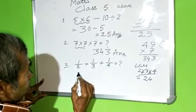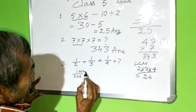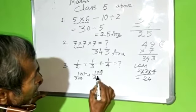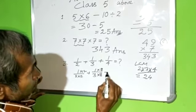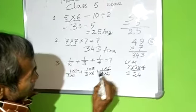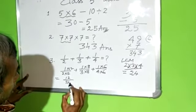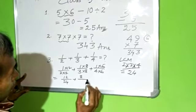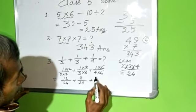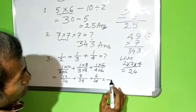Now 1 by 2 into 12 into 12, plus 1 by 3 into 8 into 8, plus 1 by 4 into 6 into 6, equal to 12 by 24 plus 8 by 24 plus 6 by 24.